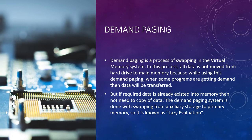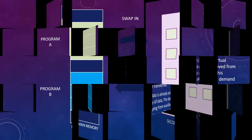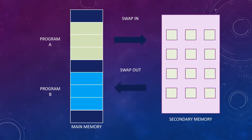But if the required data already exists in memory, then there is no need to copy the data. The demand paging system is done with swapping from auxiliary storage to primary memory, so it is known as lazy evaluation. Here is a diagram showing the swap in from program A and the swap out to program B.